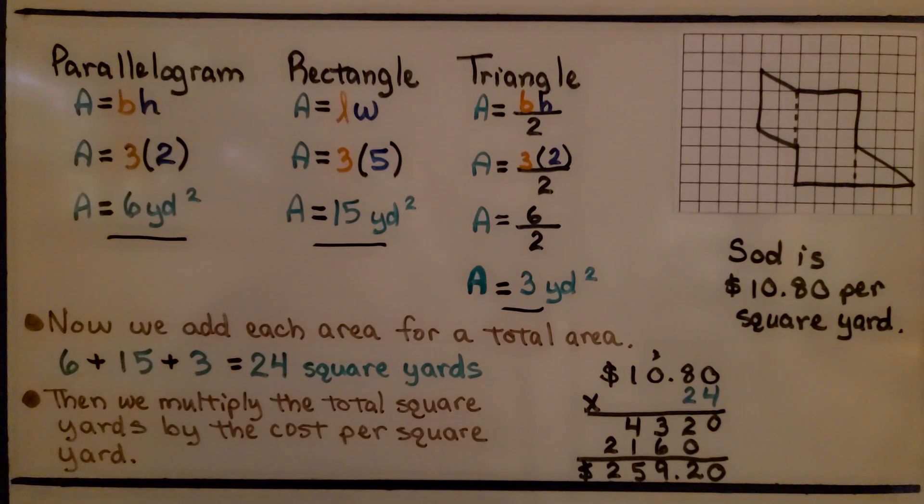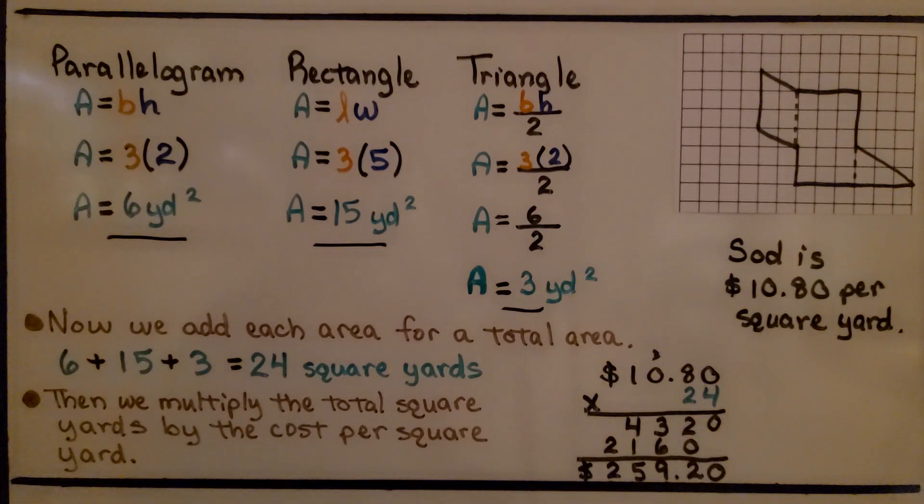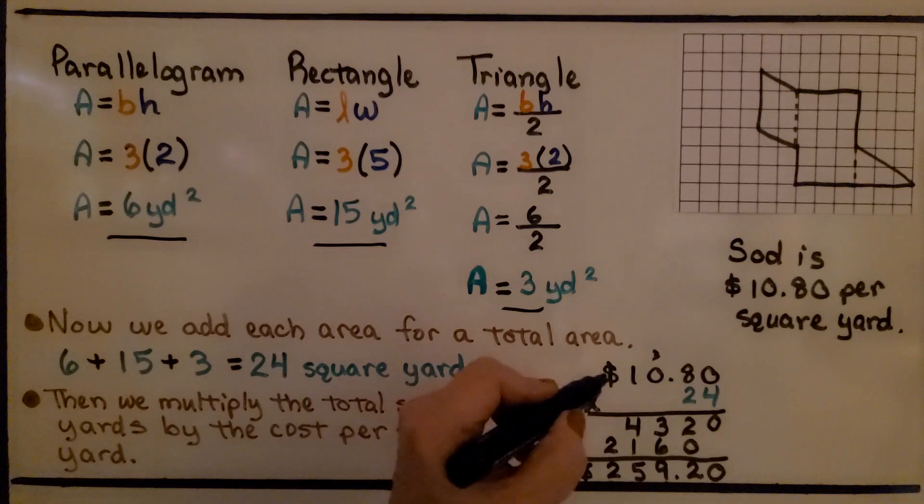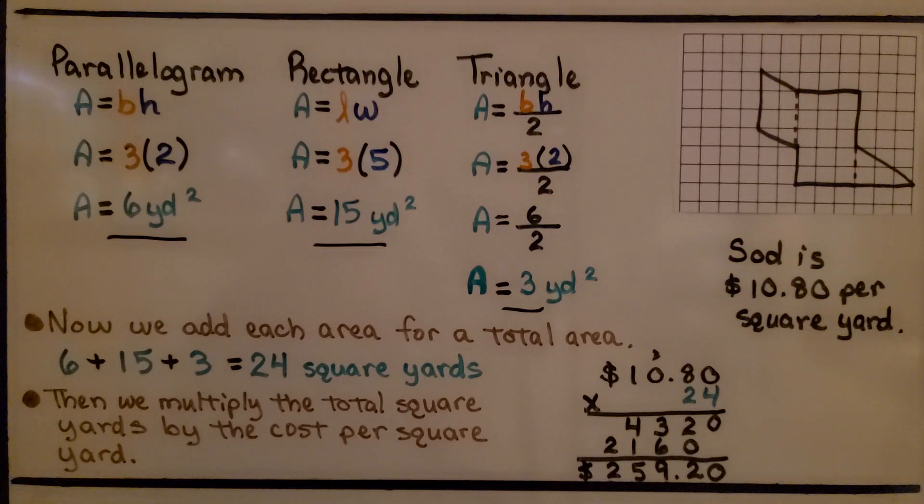Now we're not done. The sod is $10.80 per square yard. So then we multiply the total square yards, the 24, by the cost per square yard. We do $10.80 times 24, and we see that it's going to cost Dave $259.20 to sod that area of his backyard.